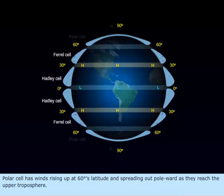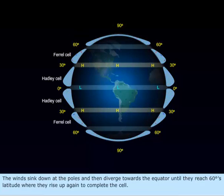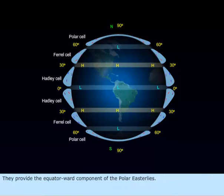Polar cell has winds rising up at 60 degrees latitude and spreading out poleward as they reach the upper troposphere. The winds sink down at the poles and then diverge towards the equator until they reach 60 degrees latitude where they rise up again to complete the cell. They provide the equatorward component of the polar easterlies.